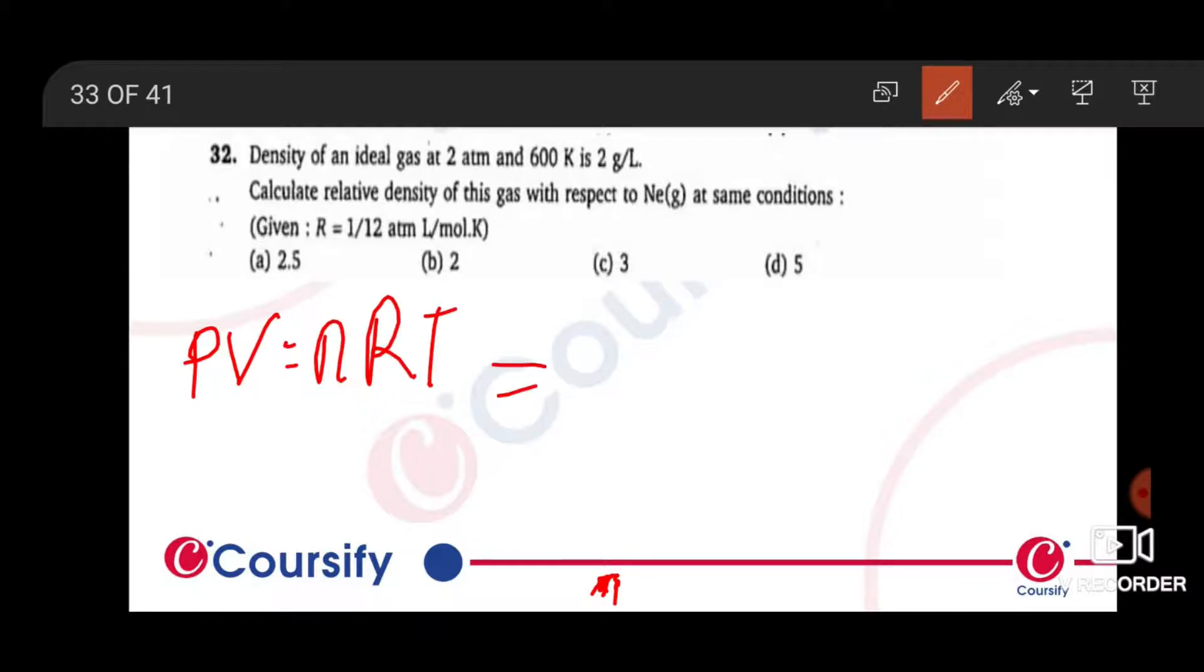The density equals PM/RT. Here we have P value of 2 atm, then M which is neon is 20, R value is 1 by 12, and T is 300 Kelvin.